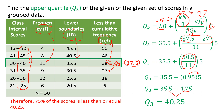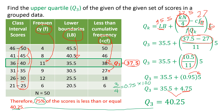This means that 75% of the scores is less than or equal to 40.25. The 75% comes from Quartile 3: 3 divided by 4 equals 0.75, and multiplying by 100 gives 75%. That is how we determine the measures of position in terms of quartile.